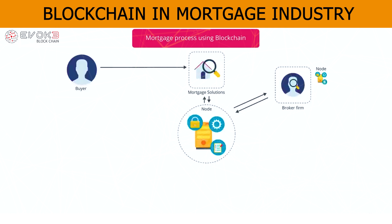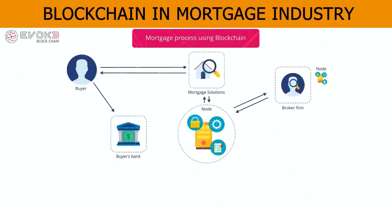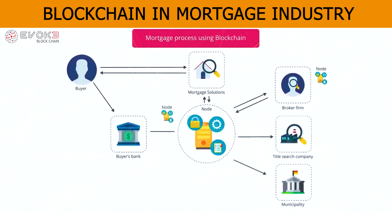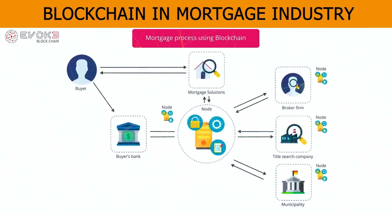The mortgage solution forwards the request. The buyer applies for a loan to the bank. The bank requests generation of reports from a title search and the ministry or municipality. The mortgage smart contract automatically redirects the request to the respective parties. A title search report is created and submitted back to the mortgage solution. A credit report is prepared and submitted to the mortgage solution. The smart contract checks the reports and imports them to the bank.